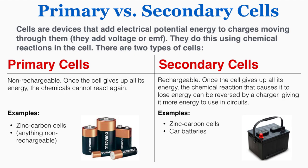In comparison, a secondary cell is rechargeable. Once the cell gives up all its energy, the chemical reaction that causes it to lose energy can be reversed by a charger giving it more energy to use in circuits. Some examples are zinc carbon cells, car batteries, really anything that's rechargeable — things like your phone battery, laptop battery. Those are all examples of secondary cells because if you pass a current through them they can be recharged.